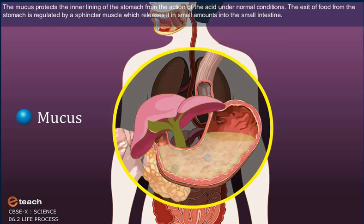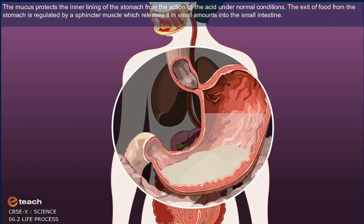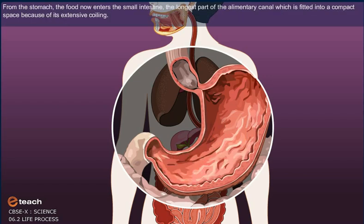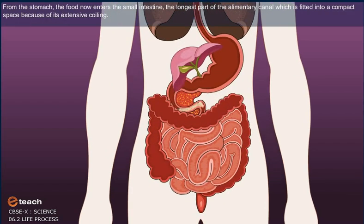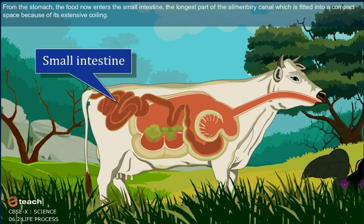The exit of food from the stomach is regulated by a sphincter muscle which releases it in small amounts into the small intestine. From the stomach, the food now enters the small intestine, the longest part of the alimentary canal, which is fitted into a compact space because of extensive coiling.